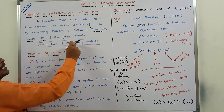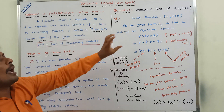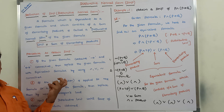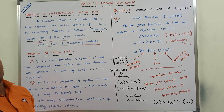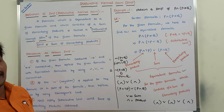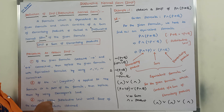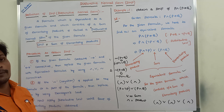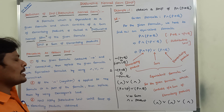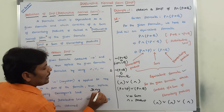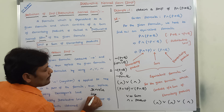This is the definition and this is the example. I am explaining the example using the definition and the steps we have to follow for finding out the equivalent DNF for the given formula. Thank you for watching this video. In the next video, I will go directly to some other example problems without repeating the procedure.